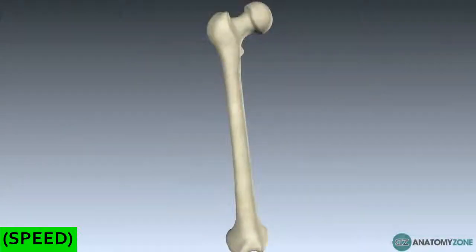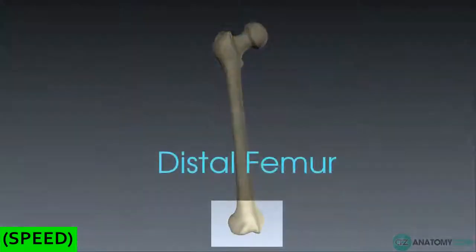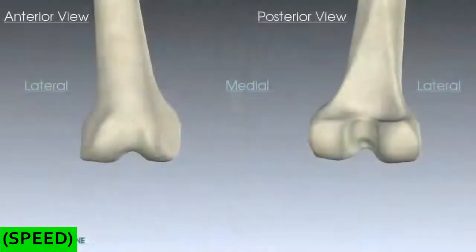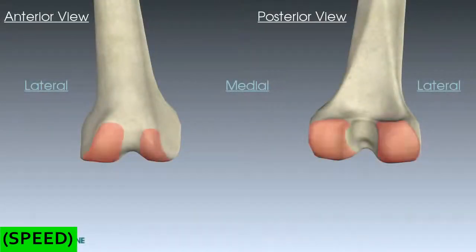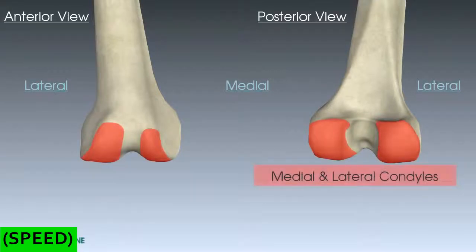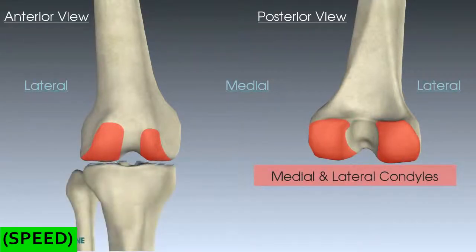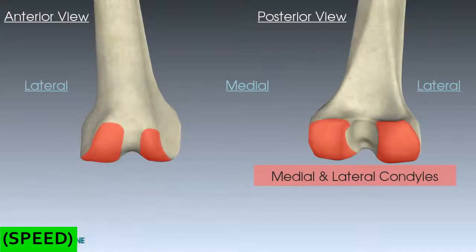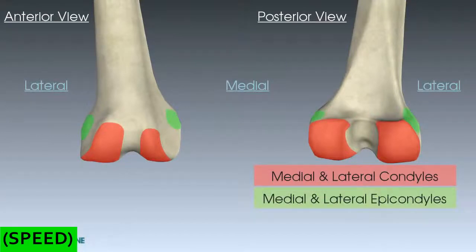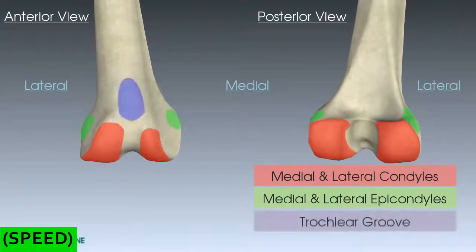Now let's go through the distal femoral features. You have two condyles — the term condyle just means knuckle — a lateral one and a medial one. They're covered in hyaline cartilage and sit on top of your tibia to form the tibiofemoral joint. Slightly above these are two smaller knuckles called the medial and lateral epicondyles. On the anterior aspect of the knee there is also a groove called the trochlear groove, in which the patella runs.